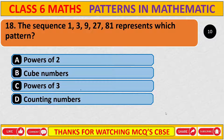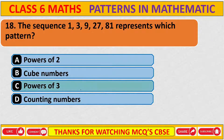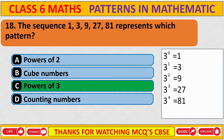The sequence 1, 3, 9, 27, and 81 represents which pattern? The correct answer is C: power of 3. 3 to the power of 0 is 1, 3 to the power of 1 is 3, 3 to the power of 2 is 9, 3 to the power of 3 is 27, and 3 to the power of 4 is 81.